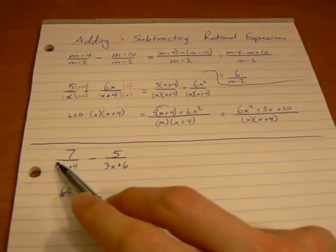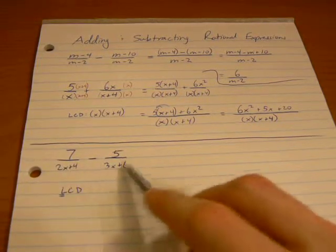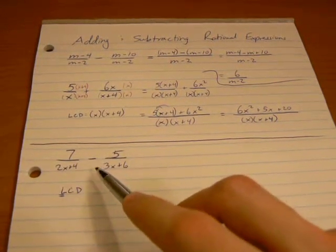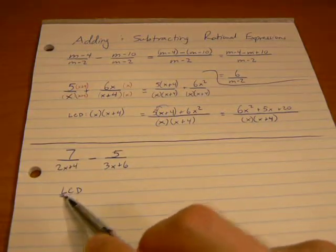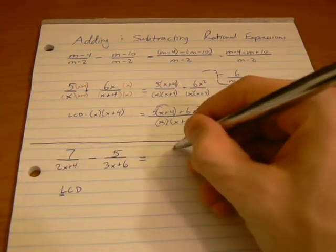You might look at these and think that our lowest common denominator would be 2x plus 4 times 3x plus 6. That is a common denominator, but that's not the lowest one. In order to find the lowest one, we need to factor our denominators first.